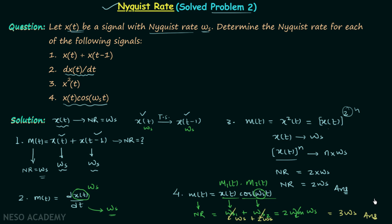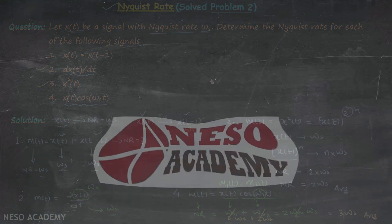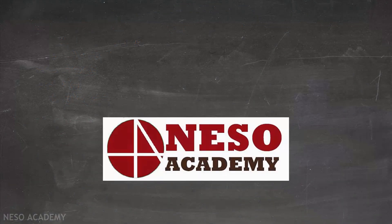In this way we have calculated the Nyquist rate for all four signals. I hope it is clear how to calculate the Nyquist rate using these properties. That is all for this lecture — see you in the next one. Thank you very much.